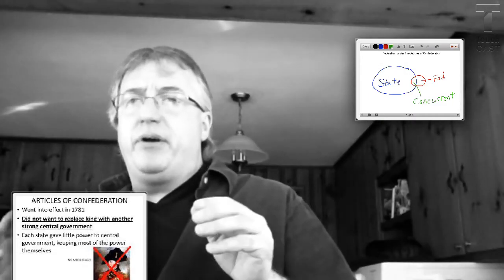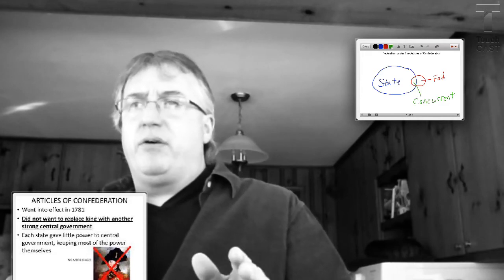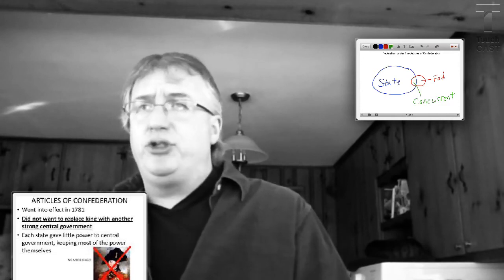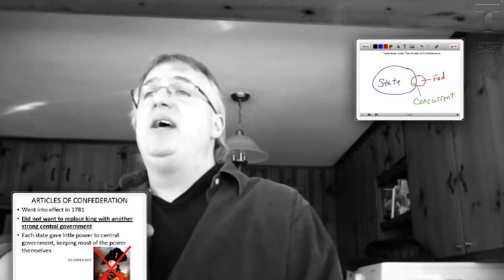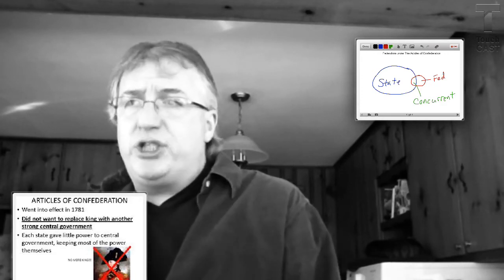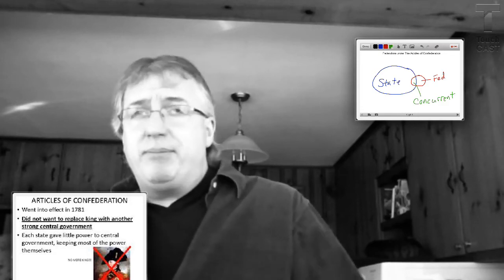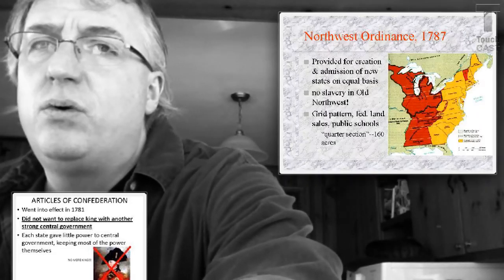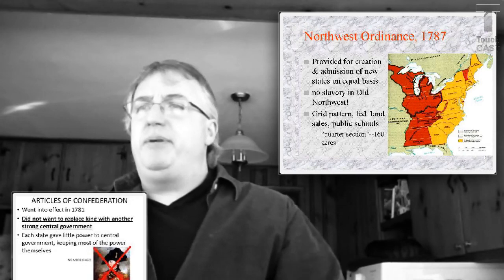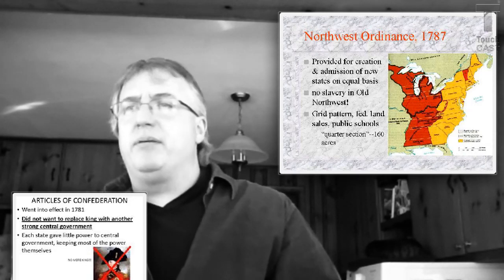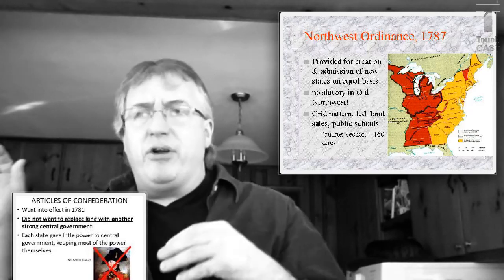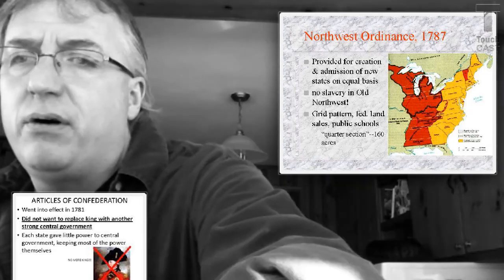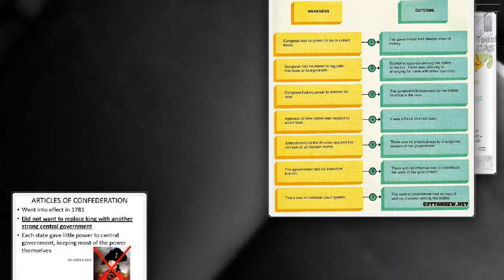There is some good about the Articles, so we'll cover that first. Number one: the Articles managed to guide us through the Revolution, which is a pretty big deal considering the size and strength of Great Britain. Number two: the Treaty of Paris, which ends the Revolution — remember the map and how much land we gain. Number three: the Northwest Ordinance, which is a good piece of legislation that lays out how a territory becomes a state, sells some public land to pay down our debt and fund schools, and bans slavery in the Northwest Territories. So the Articles aren't all bad, but the bad really outweighs the good.